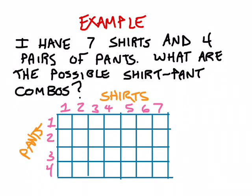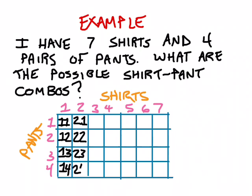So for example, this very first box represents the combination of shirt one with pant one. This one down here represents shirt one with pant two, shirt one with pants three, shirt one with pants four, and so on. Over here I've got shirt two with pants one, shirt two with pants two, shirt two with pants three, shirt two with pants four, and I could keep going.